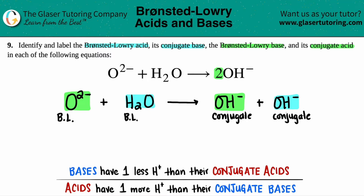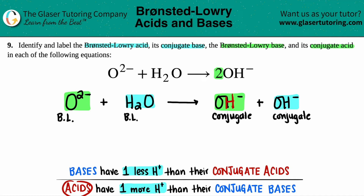Now we're going to analyze the pairs and call which one is the acid and which one is the base. Keep in mind: acids always have one more hydrogen than their respective conjugate base, and bases always have one less. Between O2²⁻ and OH⁻ — O2²⁻ has no hydrogens and OH⁻ has one. Acids always have one more, so OH⁻ has to be the acid — and it's a conjugate acid because it's on the product side. That means O2²⁻ has to be the base.